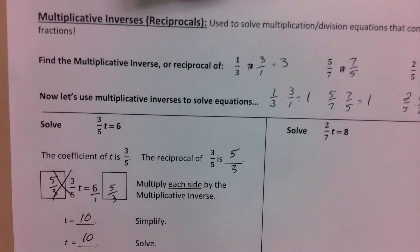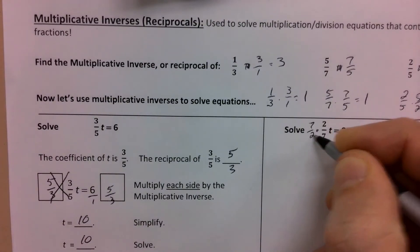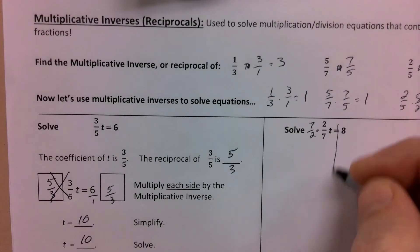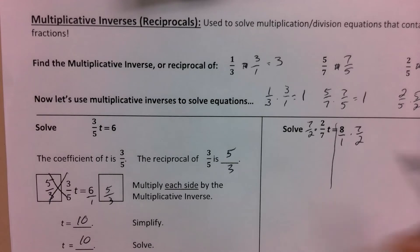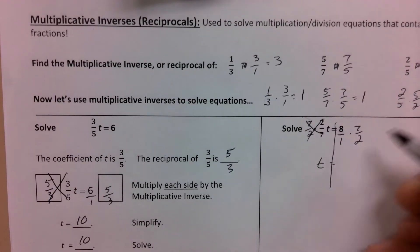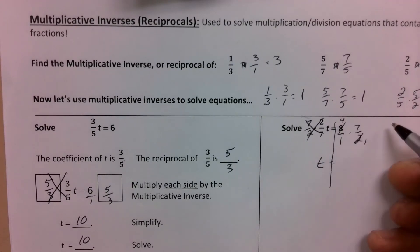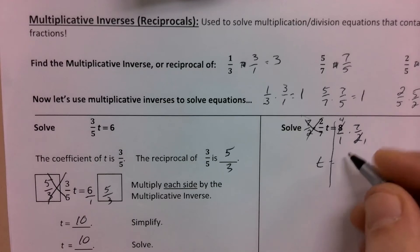All right. So here. Second one. Two sevenths times T. Multiply it by seven halves. Take eight over one times seven halves. These cancel out. T to one. T is equal to. Now I'm going to cancel. I love canceling diagonally when I do it. So I make that a one and make that a four because two goes into both of those. So instead of fifty six over two, that just goes to twenty eight over one. T is equal to twenty eight.